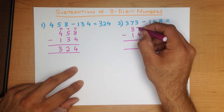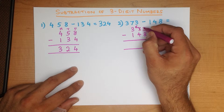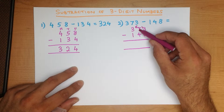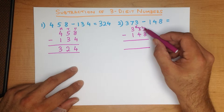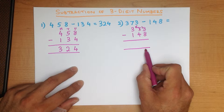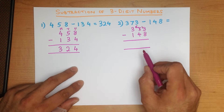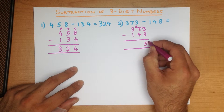We take a 10 from the column next to it. We cross the 7 out — 7 minus 1 is 6 — and we put the 1 here. We took a 10 from here; the 7 went to 6, and we put the 10 over here. The units column now becomes 13 minus 8. That's right, it is 5.